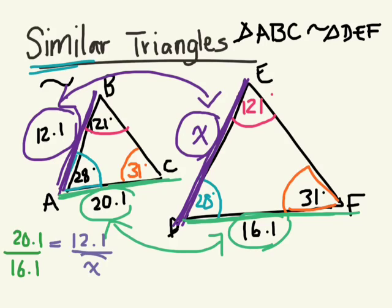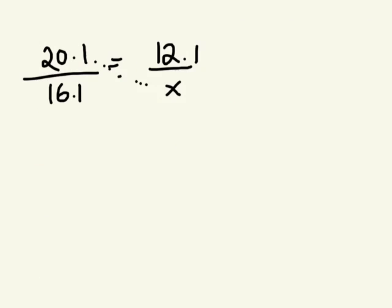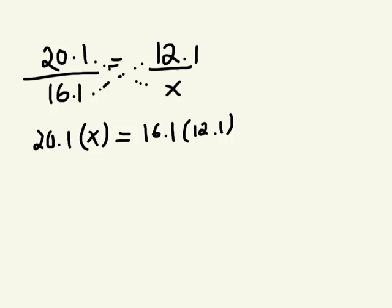So we're just going to cross multiply it. We don't know what X is, so we can't actually multiply times an unknown, but we can multiply 16.1 times 12.1, right? And what did you get for 16.1 times 12.1? I got equals 194.81. Good.